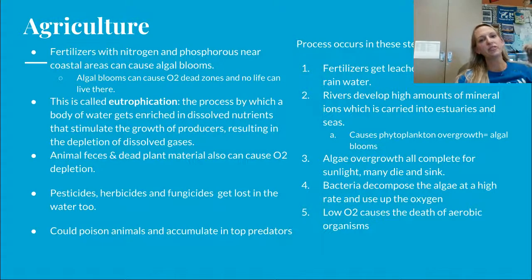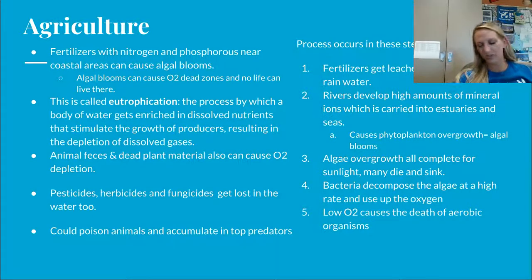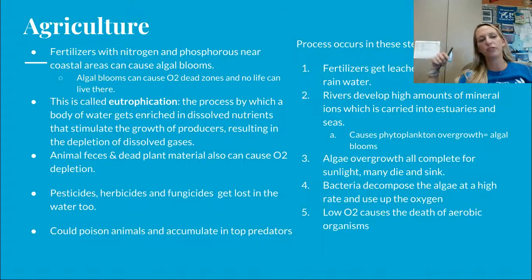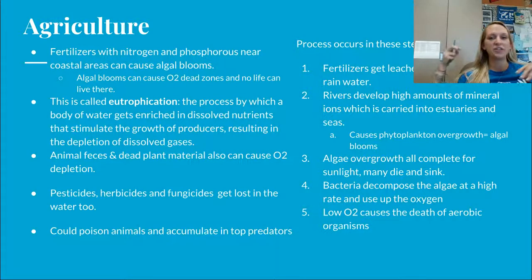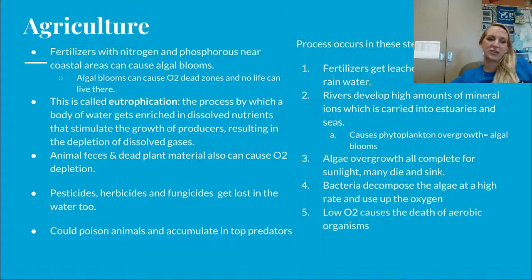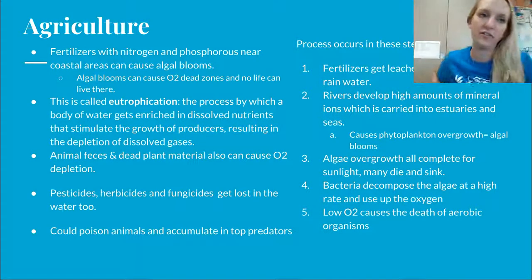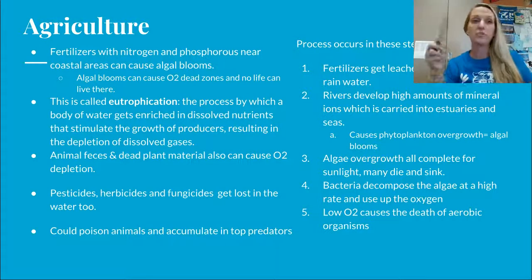Algal blooms can cause dead zones where no life can survive. This is called eutrophication — where excess limiting nutrients cause algae to grow rapidly, deplete nutrients, die and sink, and then microscopic decomposers at the bottom break down the dead algae using all available oxygen, leaving no producers, no oxygen, and essentially everything dies. Animal feces and plant material can also cause oxygen depletion the same way. Pesticides, herbicides, and fungicides from agriculture can also get into the water and poison animals, accumulating in top predators.